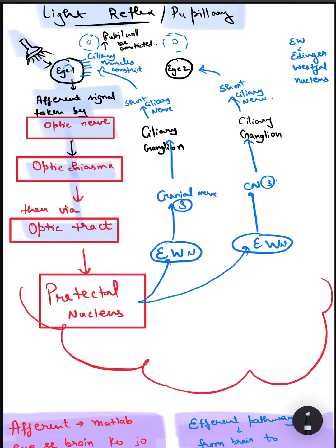then through the optic chiasma, then through the optic tract and relayed in the pretectal nucleus. The pretectal nucleus will identify the signal and send it to the Edinger-Westphal nucleus. The Edinger-Westphal nucleus sends the signals back through cranial nerve third and these cranial nerve third will relay in the ciliary ganglion.